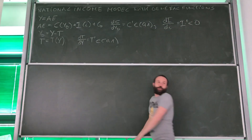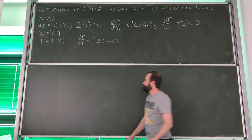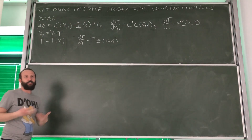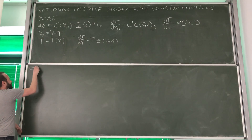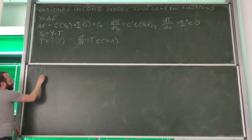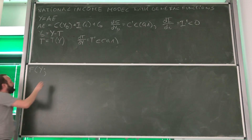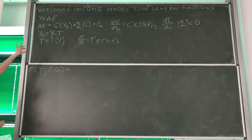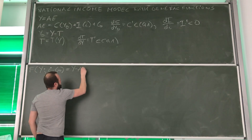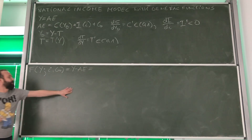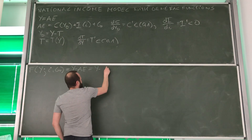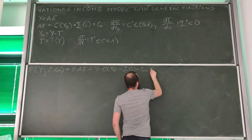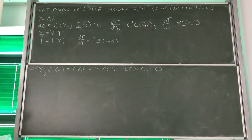So what do we need to do next? We start by creating an equation identically equal to zero. We define F with Y as the endogenous variable, separated by semicolon from the exogenous variables. This comes from the equilibrium condition: Y minus aggregate expenditures equals zero, which is Y minus C(Y_D) minus I(r) minus G₀ equals zero.